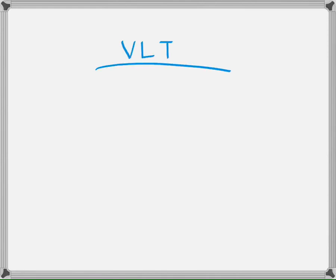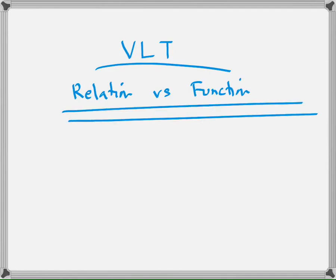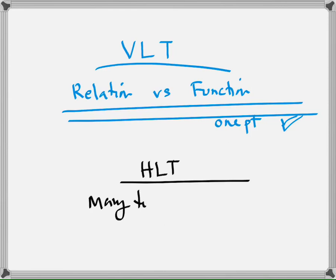That brings us to two terminologies. The first is the vertical line test (VLT), which differentiates between a relation and a function. If you draw a vertical line anywhere on the graph and it cuts at one point, it's a function; more than one point means it's a relation. The second is the horizontal line test (HLT), which differentiates between many-to-one and one-to-one. If a horizontal line cuts at one point, it's one-to-one; more than one point means many-to-one.